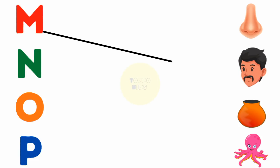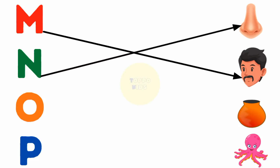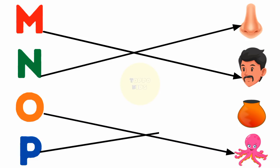M for Man, N for Nose, O for Octopus, P for Pot.